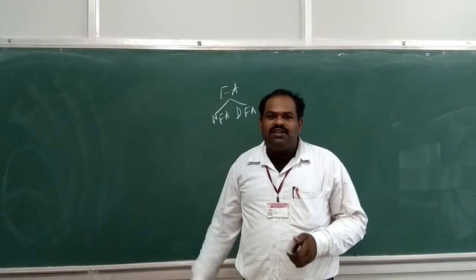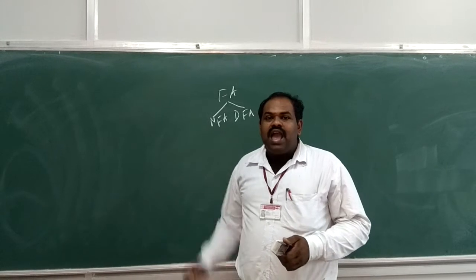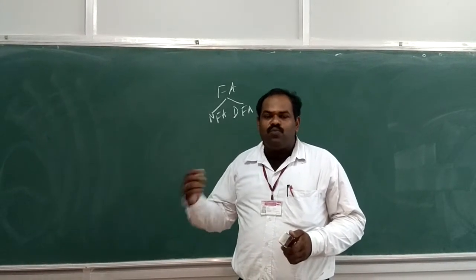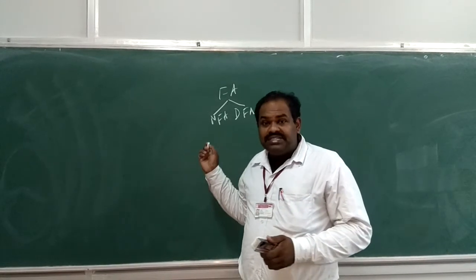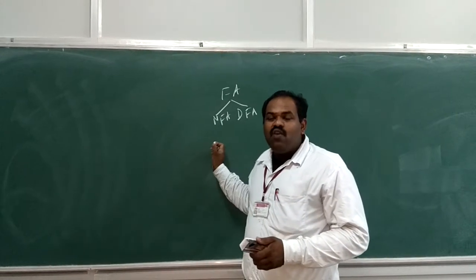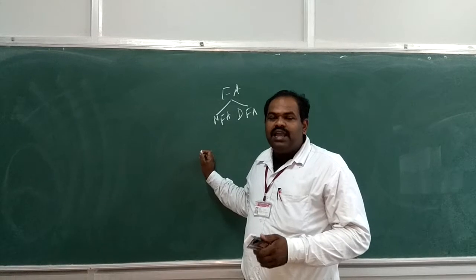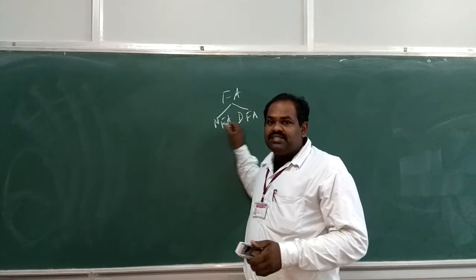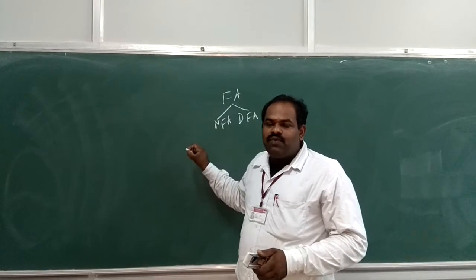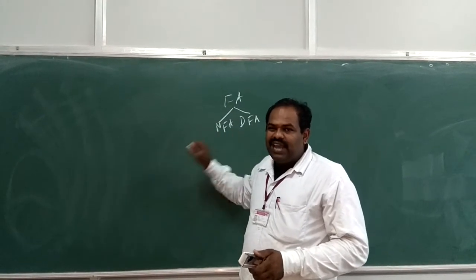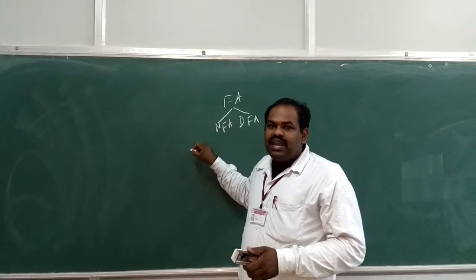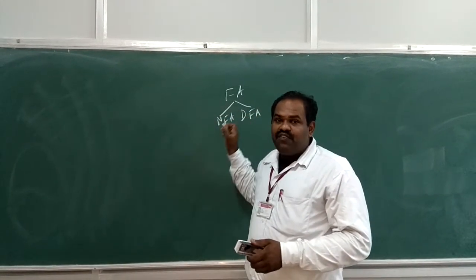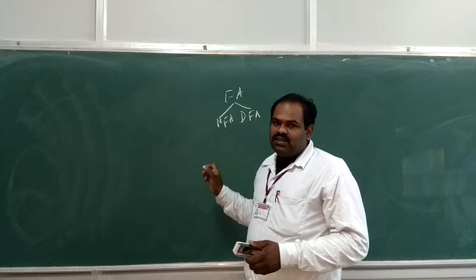Non-deterministic finite automaton is, for a single input, it may have one or two steps. For example, deterministic finite automaton, for a single input, it may go with a single statement. That's why it's deterministic. And another difference between NFA and DFA is, the NFA supports the epsilon transition. And DFA does not support the epsilon transition.